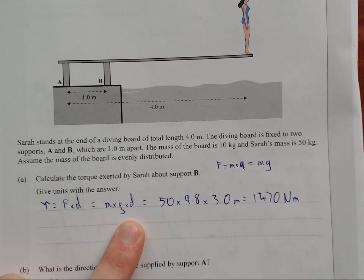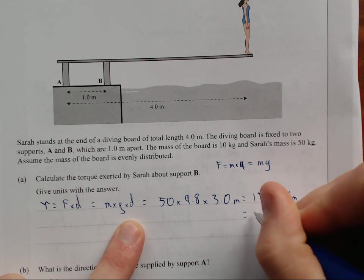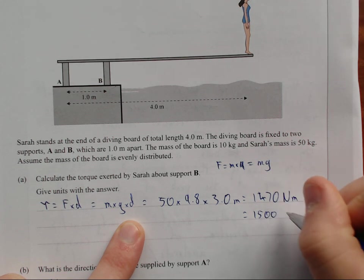But everything is 2 significant figures. This needs to be 2 significant figures. So we need to round this to 1500 newton meters.